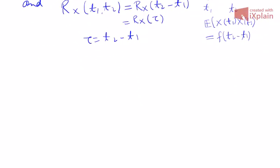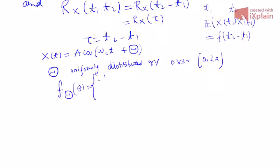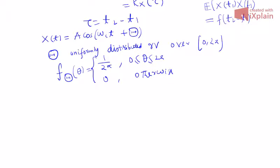I will end this lecture with one example. The same example: x(t) = A cos(ωc·t + Θ), where the random quantity is the phase Θ, which is a uniformly distributed random variable over 0 to 2π. Its PDF is 1/(2π) over [0, 2π] and 0 otherwise.